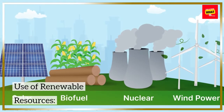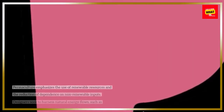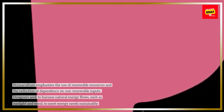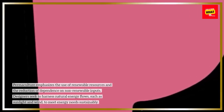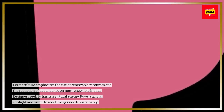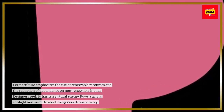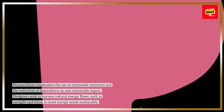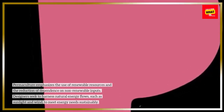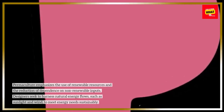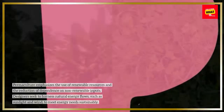Use of Renewable Resources: Permaculture emphasizes the use of renewable resources and the reduction of dependence on non-renewable inputs. Designers seek to harness natural energy flows, such as sunlight and wind, to meet energy needs sustainably.